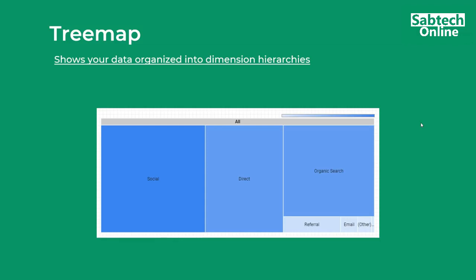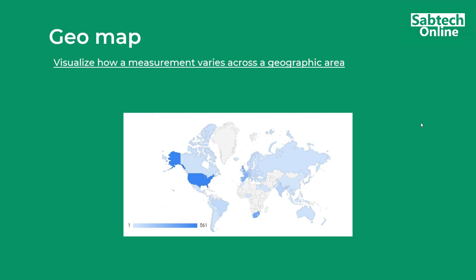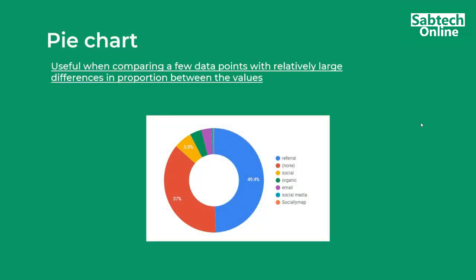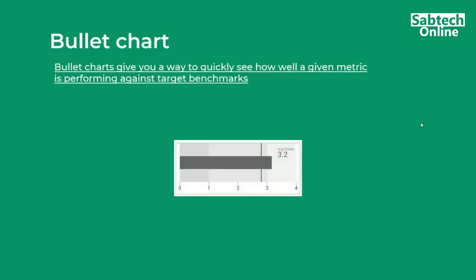Looking at geomaps, which visualize how measurements vary across geographical areas — this helps look at data dimensionally tied to geographical regions. Then the pie chart, which is useful when comparing a few data points with relatively large differences between values. It should be used when you have only a few dimensions; if there are too many, use a bar chart instead. Then we have the bullet chart, which gives a way to quickly see how you are hitting your performance targets and benchmark against them.